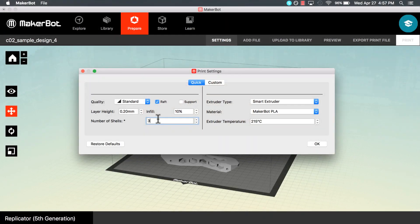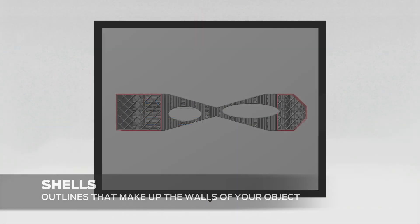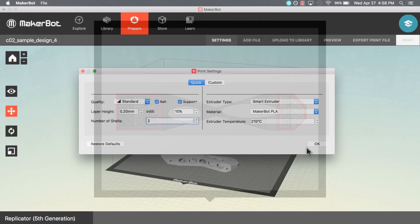Shells are the outlines that make up the walls of your print. Adding shells can increase the strength of the model. Generally, 2-5 shells is more than enough for most prints.